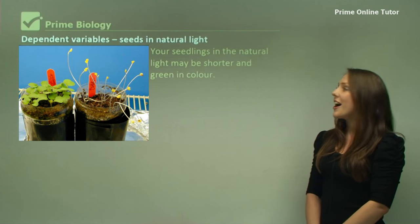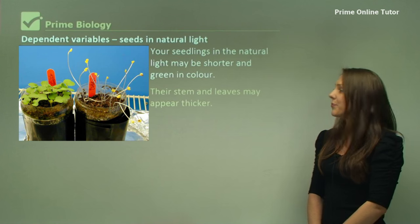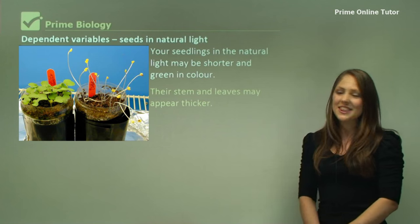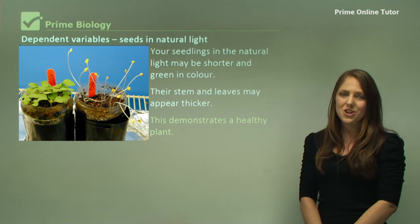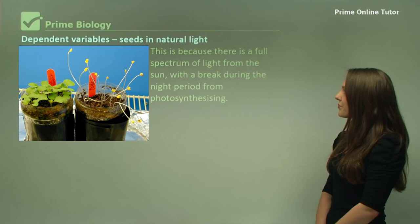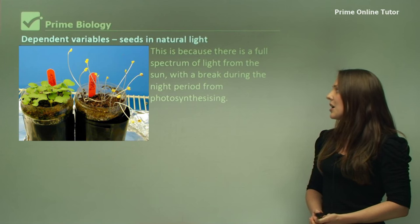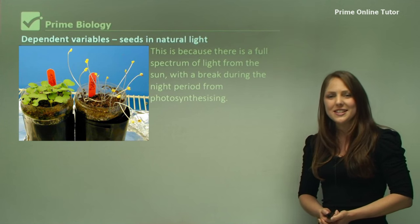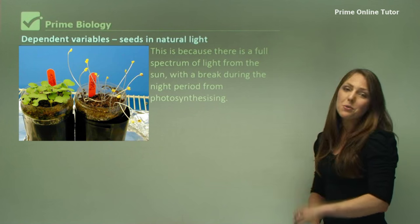The seeds in natural light may appear shorter and green in colour. Their stem and leaves may appear thicker and it demonstrates a healthy plant and will look much healthier compared to the other one. This is because there is a full spectrum of light from the sun with a break during the night from photosynthesising. If it didn't have a break through the night, it may not be so healthy.